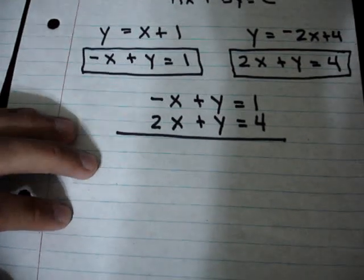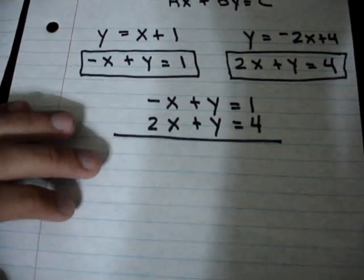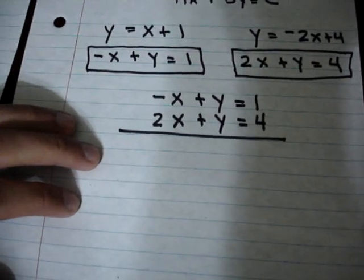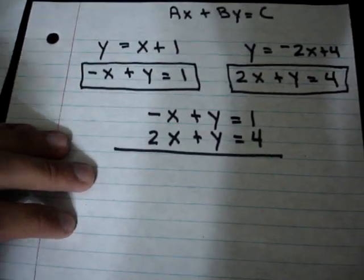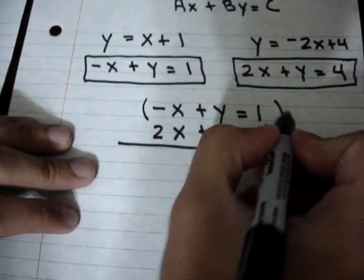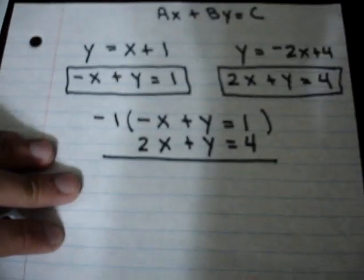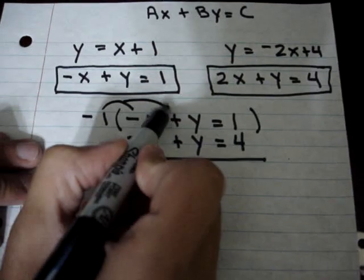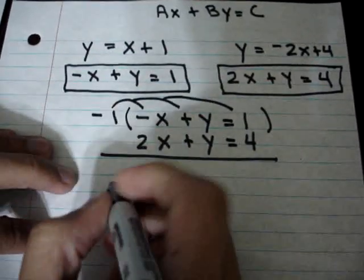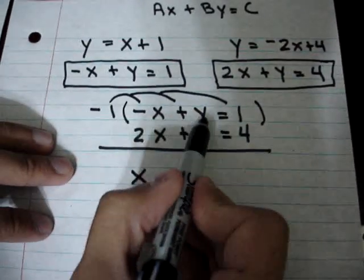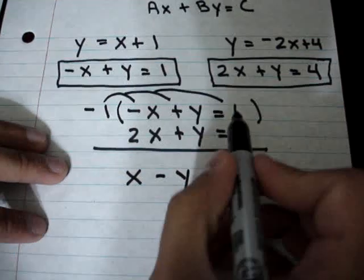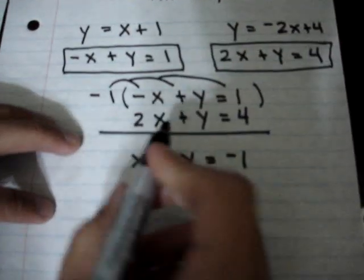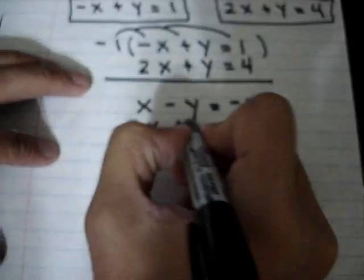In order to do this, what you want to do is take one of the equations — it could be the top or the bottom — and switch all of the signs by multiplying by negative 1. I'm going to do this to the top equation. What happens is all of the signs change because negative 1 is distributed throughout the equation. So instead of negative x we get positive x, instead of positive y we get negative y, and instead of 1 we get negative 1. That's your new equation. The bottom one stays the same: 2x plus y is equal to 4.